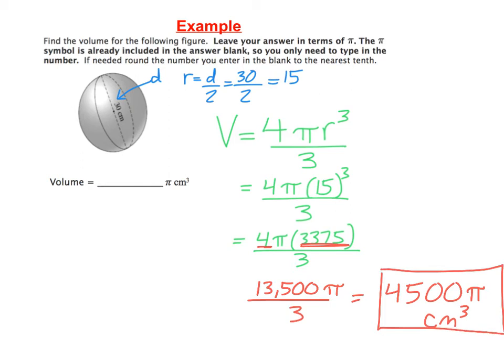When you go ahead and type your answer in on Schoology, the pi and the centimeter cubed are already part of the answer blank. So you will just need to type in 4,500.